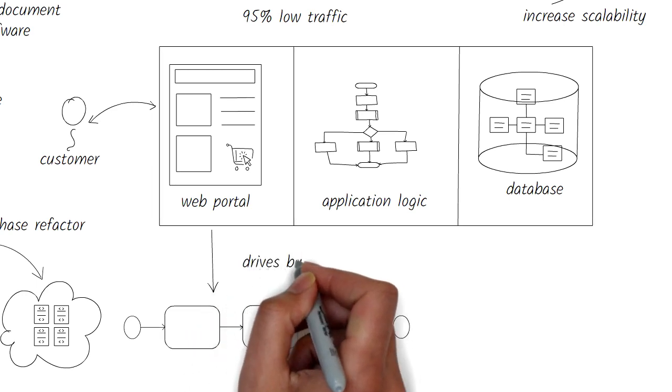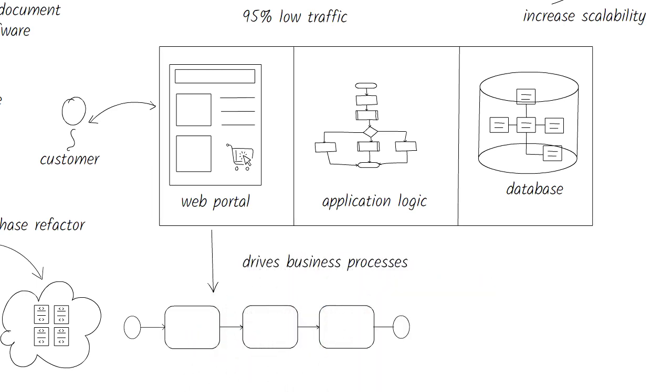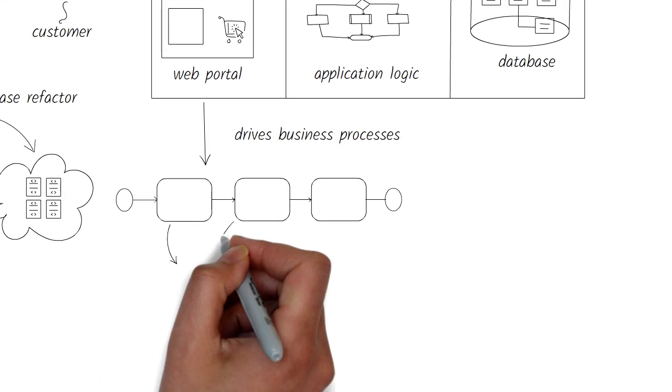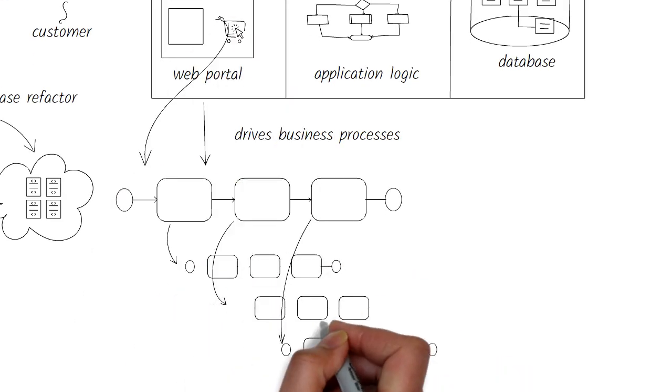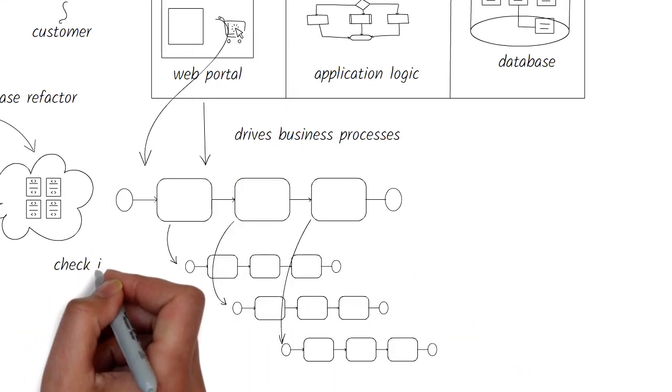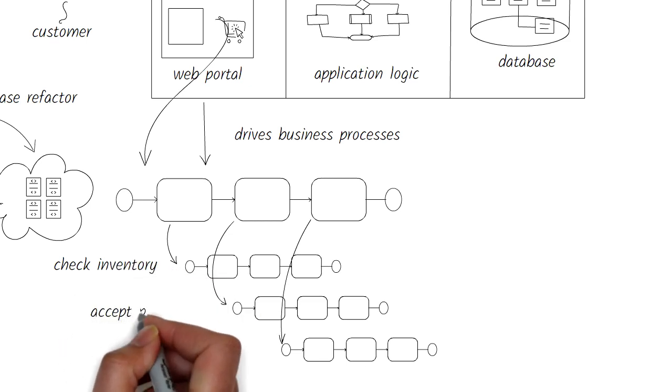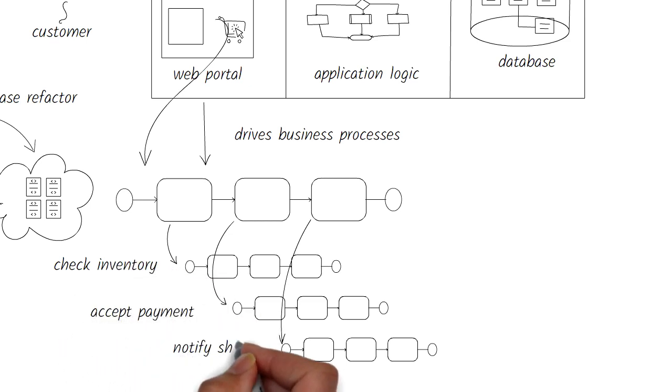Overall, this application drives many business steps or entire business processes. The customer shops on your website and drops a product in the shopping cart. Once the customer purchases the product through a checkout process, it triggers a business process that checks inventory, accepts payments, and sends a notification to the shipping department to ship the product to the customer's address.